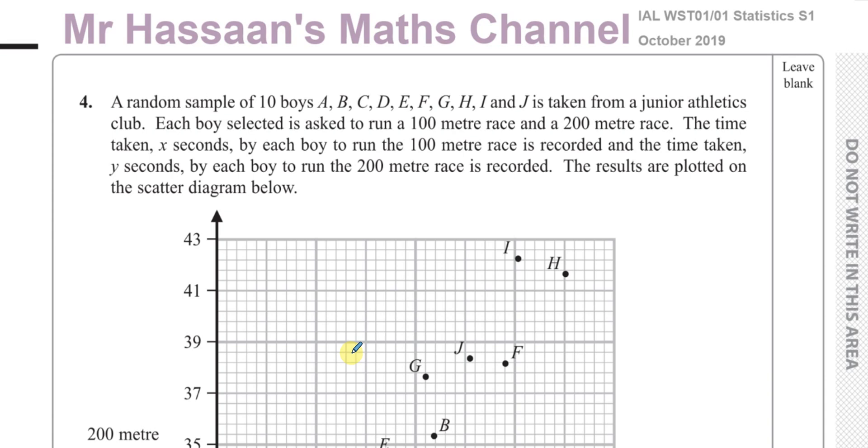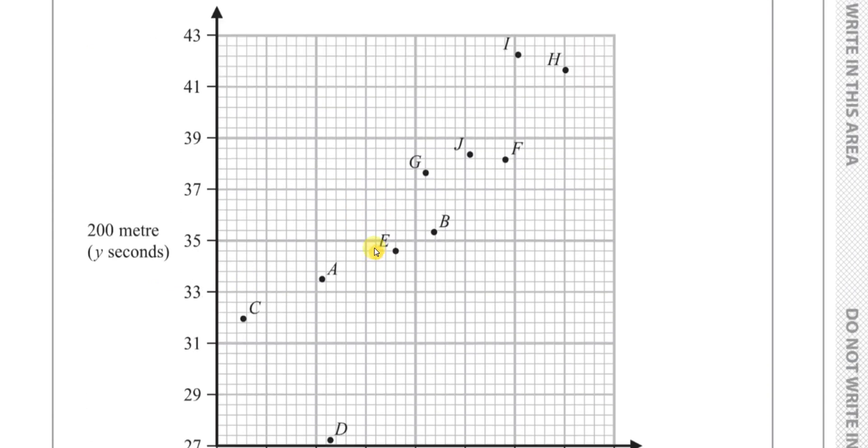It says a random sample of 10 boys A, B, C, D, E, F, G, H, I and J is taken from a junior athletics club. Each boy selected is asked to run a 100 meter race and a 200 meter race. The time taken X seconds by each boy to run the 100 meter race is recorded and the time taken Y seconds by each boy to run the 200 meter race is recorded. The results are plotted on the scatter diagram below.